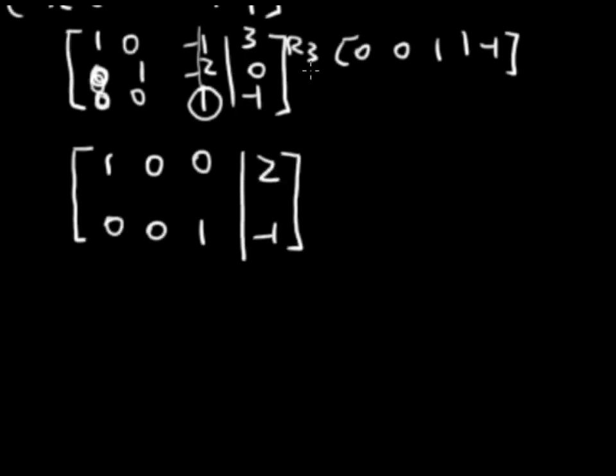And for this negative 2, I'm going to take row 3 and multiply it by positive 2. So 0, 0, 2, negative 2. And again, add side by side. 0, 1, negative 2 and 2 is 0, 0, negative 2, negative 2.